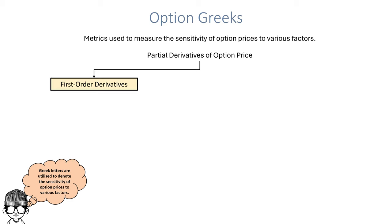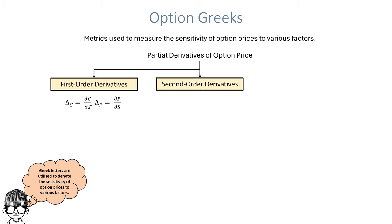We can have first-order derivatives. One example is delta, where delta essentially measures the sensitivity of the option price to changes in the underlying price. We also have second-order derivatives. One example is gamma, where gamma measures the double derivative of the option price with respect to the underlying price. It can also be interpreted as the rate of change in delta with respect to the rate of change in the underlying price.